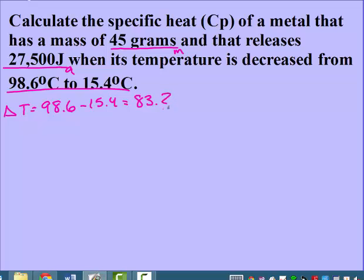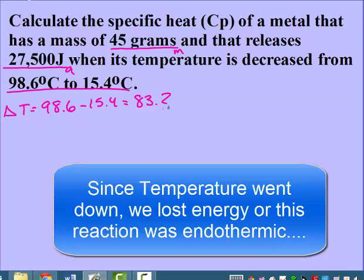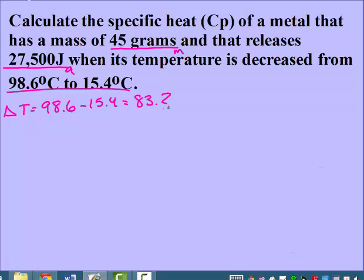On this one the temperature decreased. If you're not solving for temperature, you can just do bigger minus smaller, because otherwise we would have to put a negative in front of the Q. So although this one, if we did final minus initial, would give us a negative, just make it where it's going to be positive.